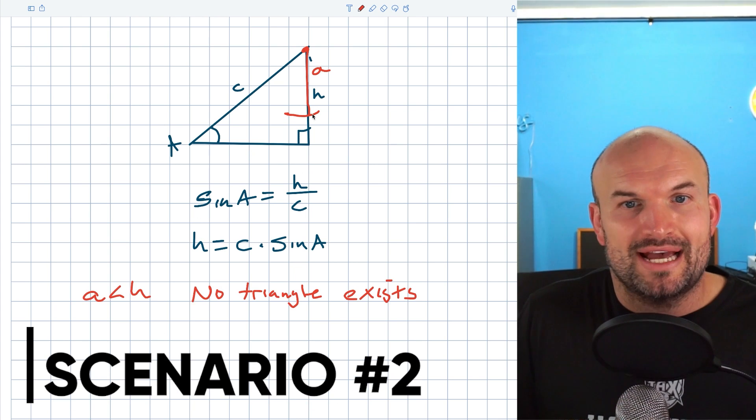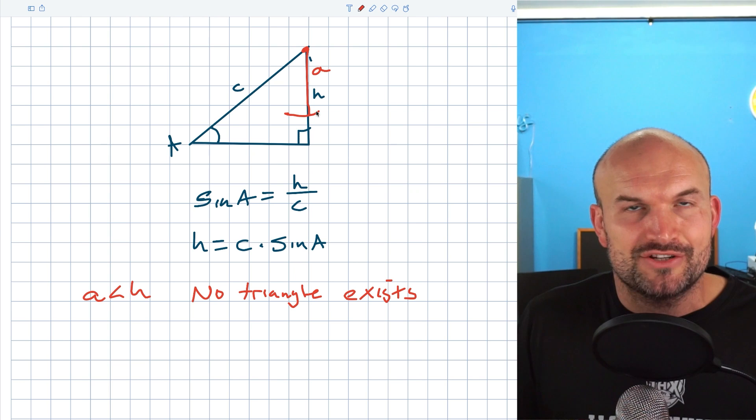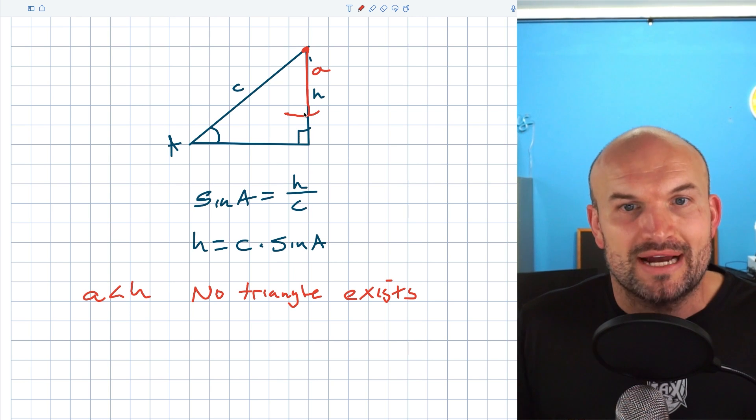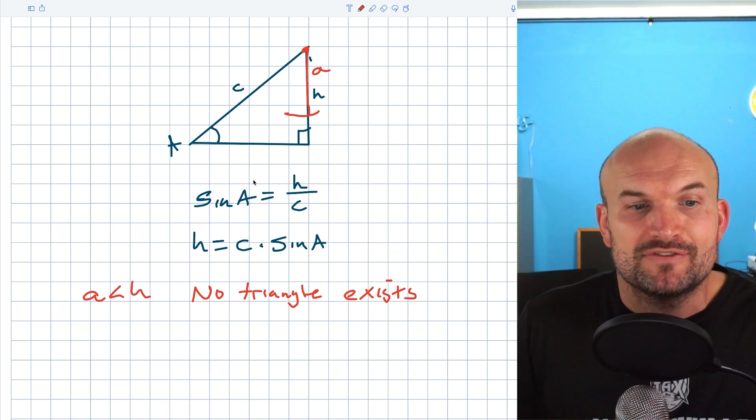Now the next scenario that we can look at is the one we kind of start off with. If A is equal to H, then we exactly have one triangle, right? Because obviously you can see A is going to be the height of the triangle.